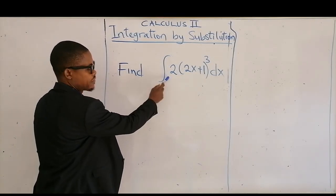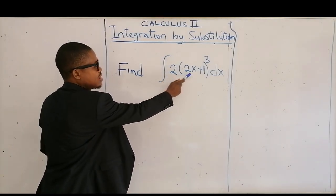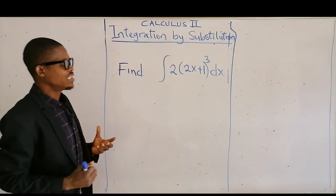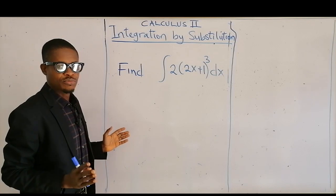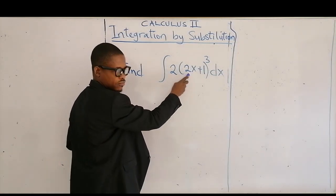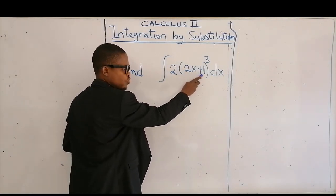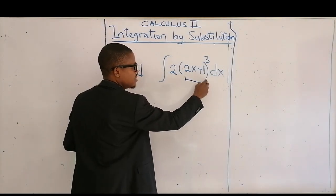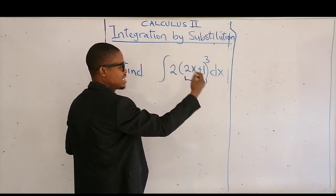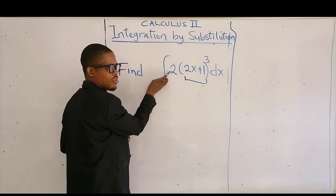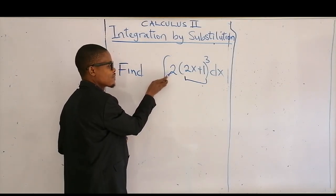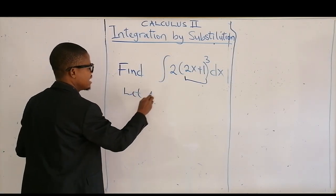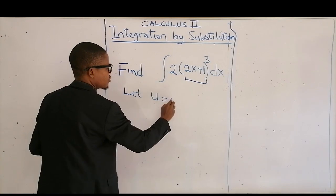To look at this question, we have to find the integral of 2 times this expression to the power 3. So what we'll do in integration by substitution is very simple. We'll look for the inner function, and in this case it's 2x plus 1. When you differentiate this inner function, 2x plus 1, it's going to give you something similar or exactly the same figure or expression. Without wasting time, let u be equal to the inner function.